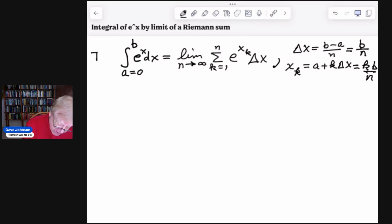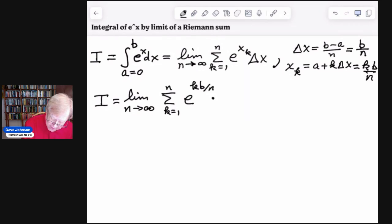So I like to have a handle for the integral, which will also become the handle for this limit of the sum. And so let's go ahead and do our substitutions. So I equals limit as n goes to infinity of summation k equals 1 to n. And so the x sub k is k times b over n, so e to the k b over n. And then the delta x is the b over n.